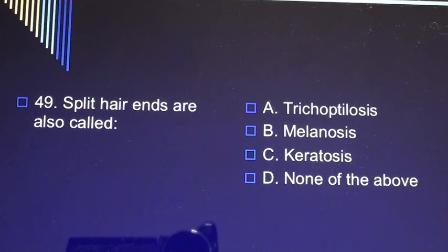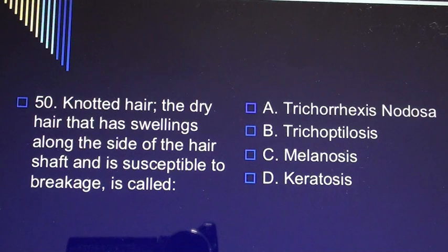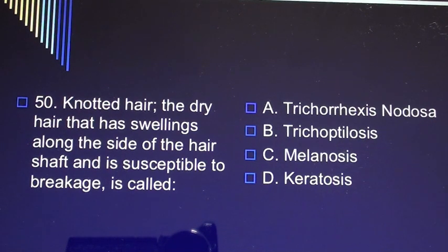Question 49: Split hair ends are also called A) trichoptylosis, B) melanosis, C) keratosis, D) none of the above. Question 50: Knotted hair — the dry hair that has swelling along the side of the hair shaft and is susceptible to breakage — is called A) trichorrhexis nodosa, B) trichoptylosis, C) melanosis, D) keratosis.